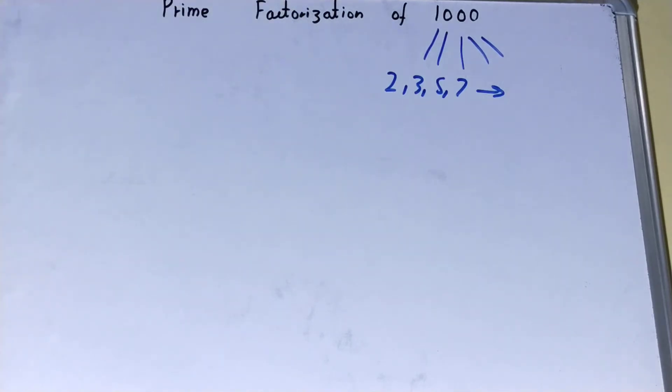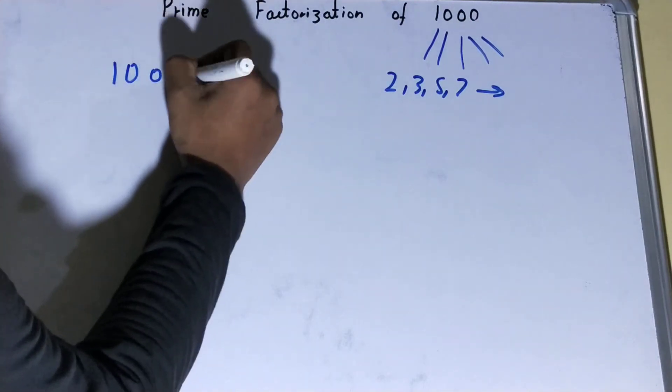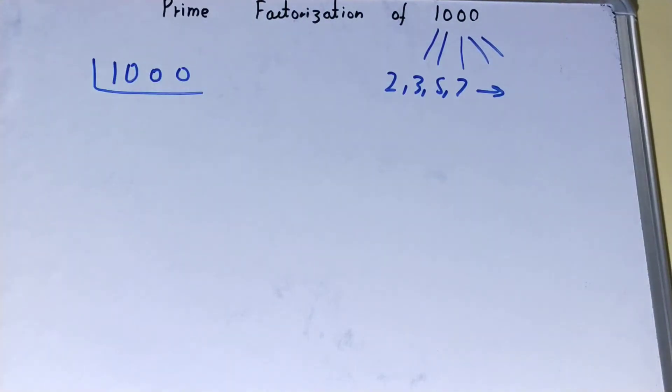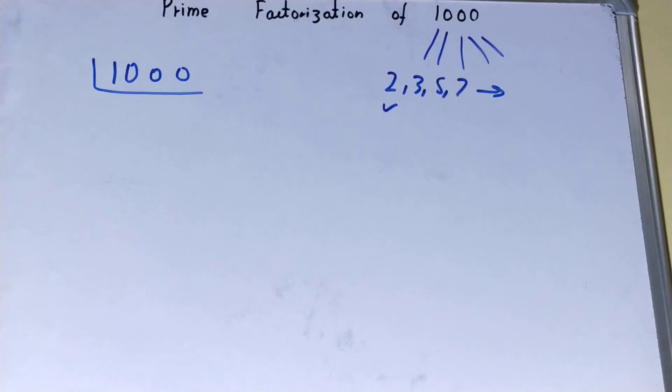Now let's quickly factorize this 1000 into a group of primes. So we'll draw like this and we'll start from the lowest prime number, which we know is 2. Is this 1000 divisible by 2? It is clearly, so divide it and you'll be left with 500.